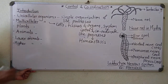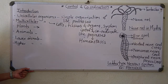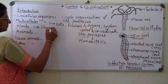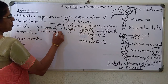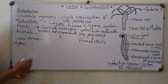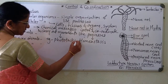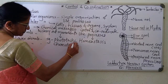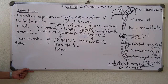In plants specifically, there is also coordination. The coordination, for example, involves sending chemical messages and carrying out movements. There is a peculiar type of coordination present in plants — for example, phototactic, chemotactic, and thigmotactic.